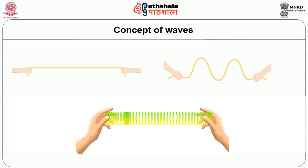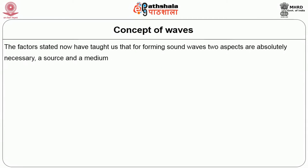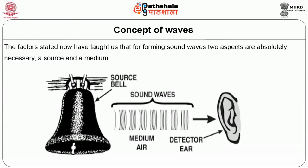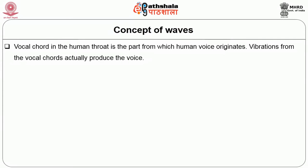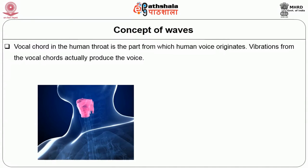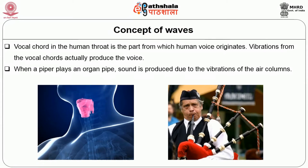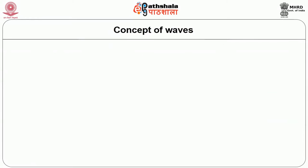For forming sound waves, two aspects are absolutely necessary: a source and a medium. The vocal chord in the human throat is the part from which human voice originates — vibrations from the vocal chords actually produce the voice. When a piper plays an organ pipe, sound is produced due to the vibrations of the air columns. To learn about wave movement in air, understanding a few terms related to sound propagation will be helpful.